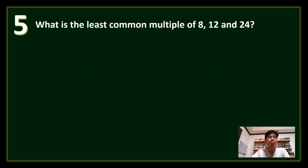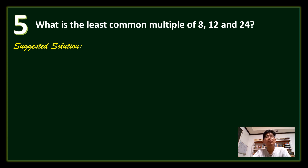Question number 5: What is the least common multiple of 8, 12, and 24? We can observe that 24 is divisible by 8, 24 is divisible by 12, and 24 is divisible by itself. Therefore, 24 is the least common multiple.